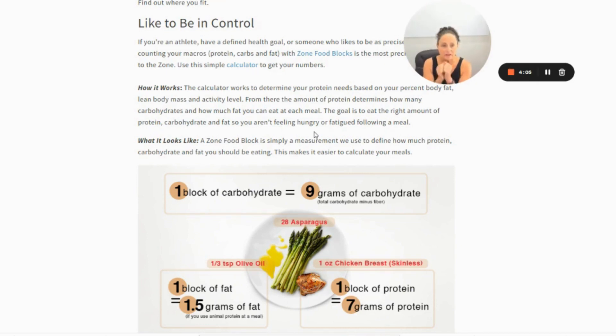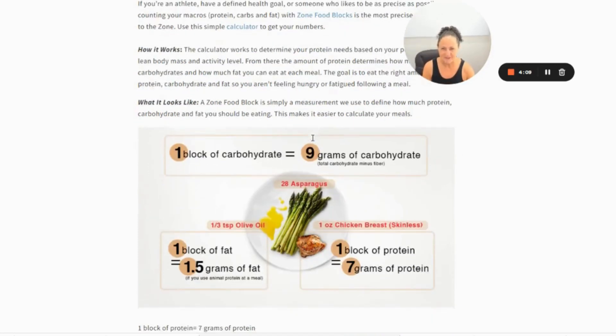All right so that being said let's look at what is a block exactly. In this little schematic this is what a block is going to look like. One block of carbohydrate is going to equal nine grams of carbohydrate and it's the total amount of carbs minus fiber. The one thing that we now know is to get the most amount of satiety—in other words to keep yourself feeling satisfied and full for the longest amount of time—it's about getting the correct amount of protein and a lot of fiber. Protein and fiber together is what creates the most amount of satiety. When we're looking at the nine grams of carbohydrates it's total minus the amount of fiber.